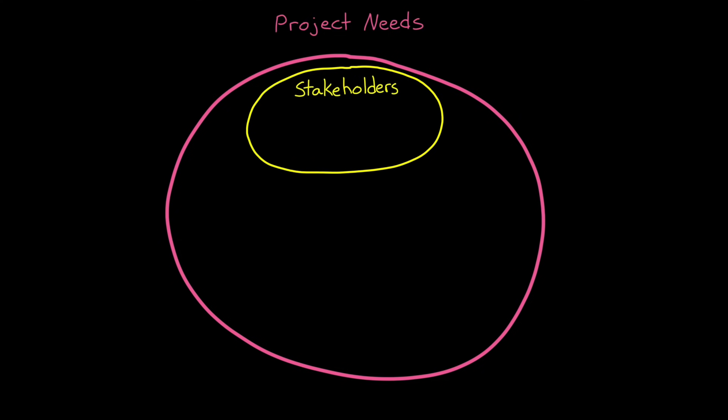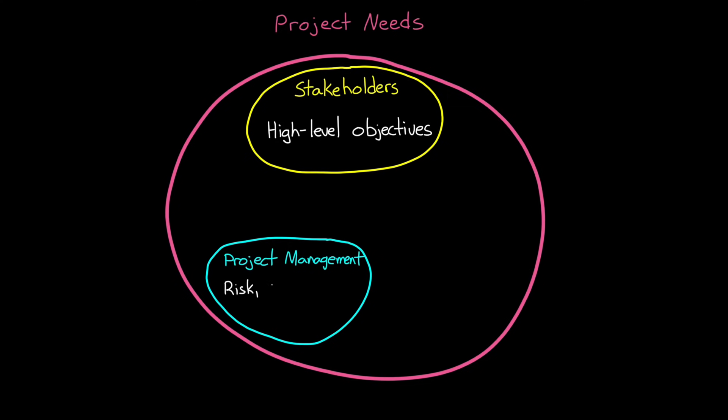There are the stakeholders, the ones who started the whole project and drive the high-level objectives. These are the customers, the ones who ultimately determine in the end whether the thing you built has value to them. However, there's also project management, who needs to balance risk, and schedule, and the budget, and other programmatic constraints.